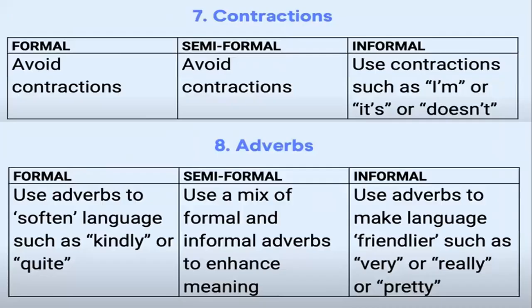Seventh, no use of contractions in formal letters; semi-formally and informally you can use them. Eighth, adverbs — use them formally in a polite form, and informally you can use anything. These are the eight things you need to consider for your IELTS General Writing Task 1 letter tone.